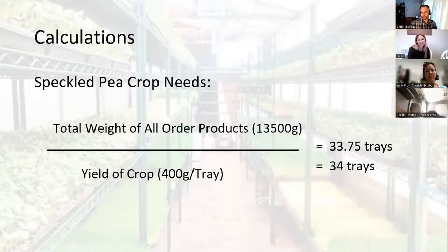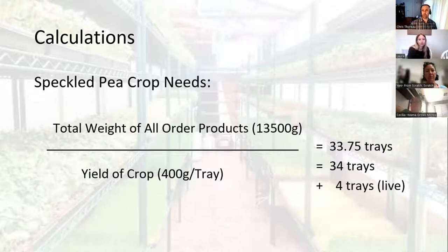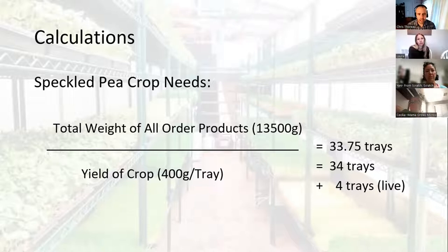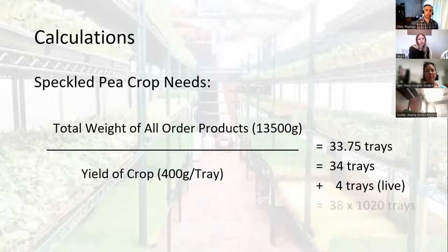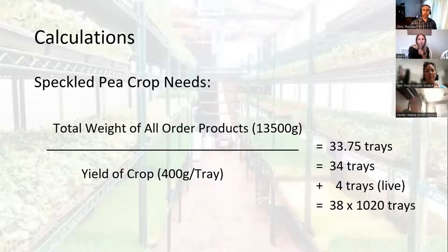We round up to 34 trays, and then accounting for live trays, we need to sow 38 ten-by-twenty trays — soaking on June 15th, sowing on June 16th — to make sure they're ready for our expected harvest day. We really looked at that in a step-by-step manner last week. In essence it's a really simple process, but as you're in production and have a lot to manage, things can start to get more complicated when things don't go as expected.